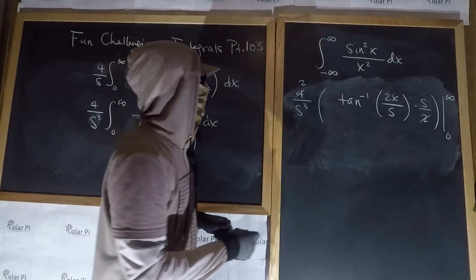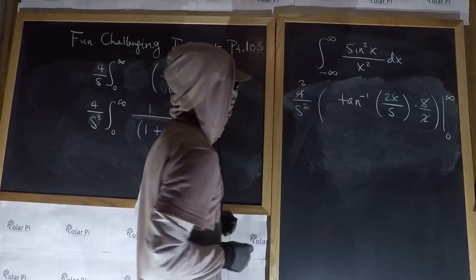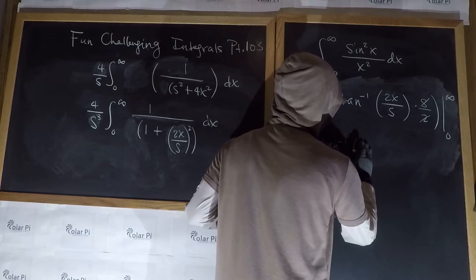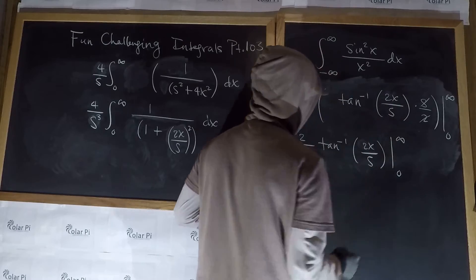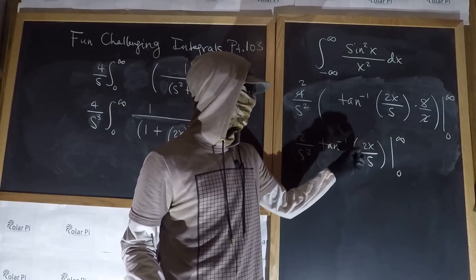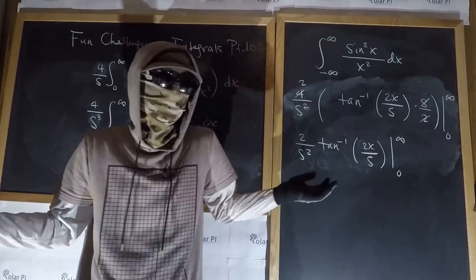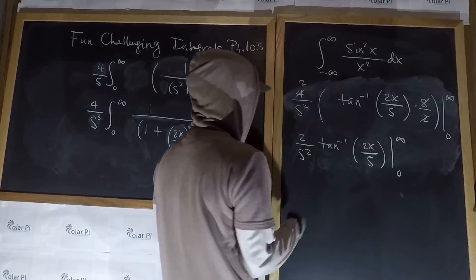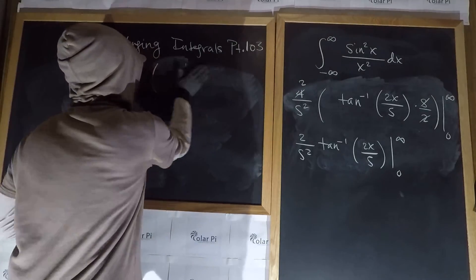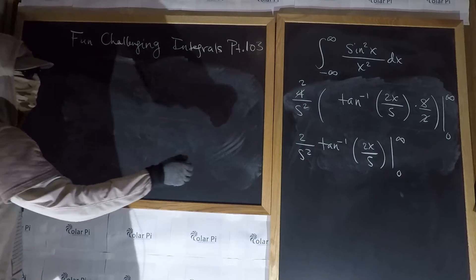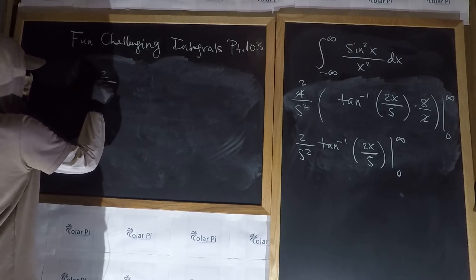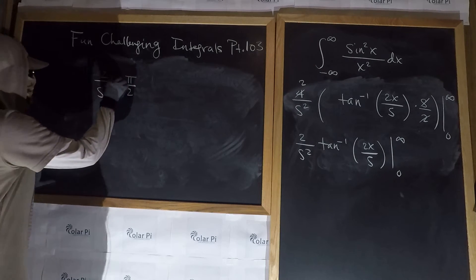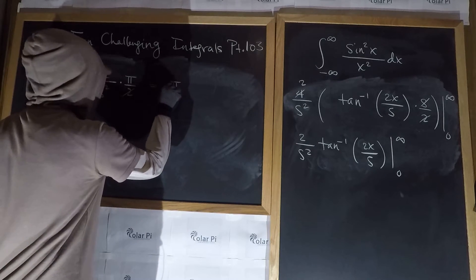The 2 there and the 4 there turns into a 2. An s here takes care of an s here. So we have 2 over s squared times tan inverse of 2x over s, evaluated from 0 to infinity. If you plug in infinity, tan inverse is going to give pi over 2, because tan inverse asymptotically approaches pi over 2 as x goes to infinity. And if you plug in 0, tan inverse of 0 is 0. So after the evaluation, this here is going to turn out to be 2 over s squared times pi over 2, and the 0 part gives us 0. So we have pi over s squared.